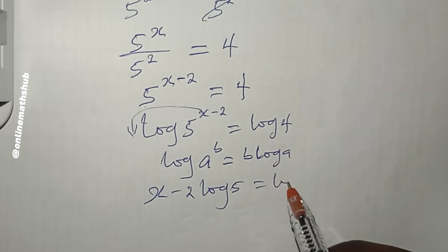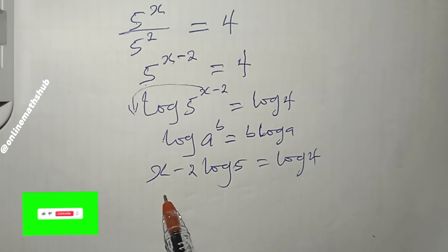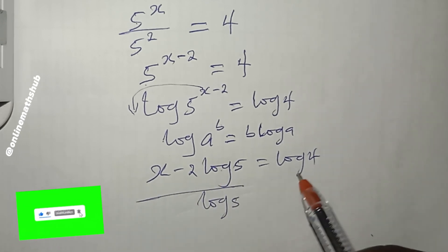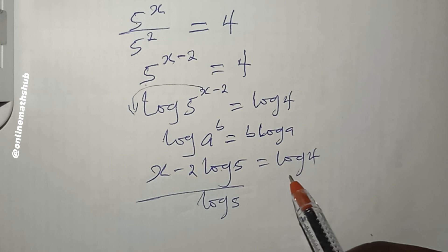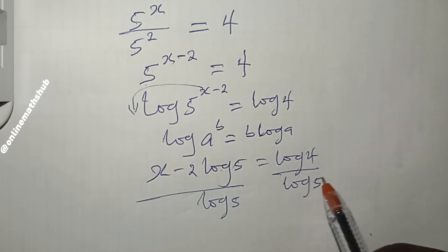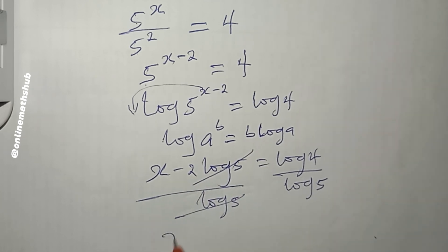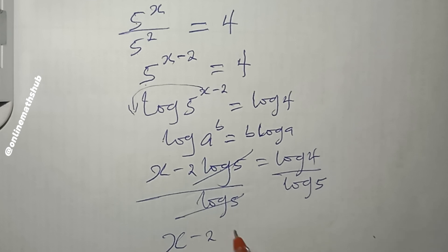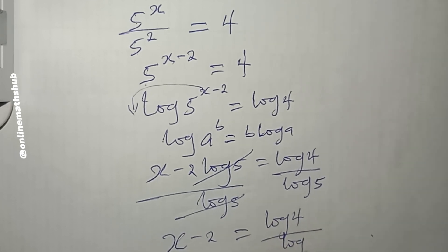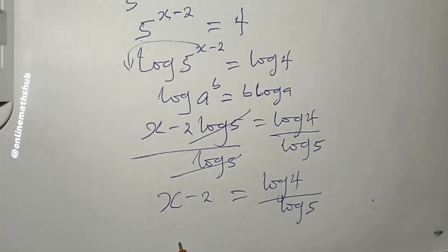At this point I can divide through by log(5) so that I can simplify this further and get the value of x. This cancels, so I'm left with x - 2 = log(4) / log(5).